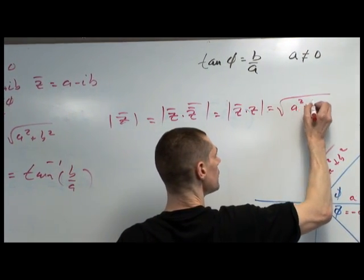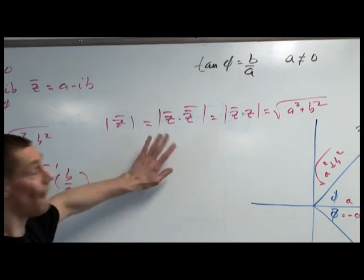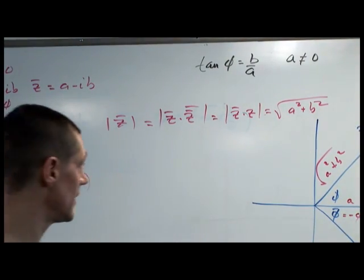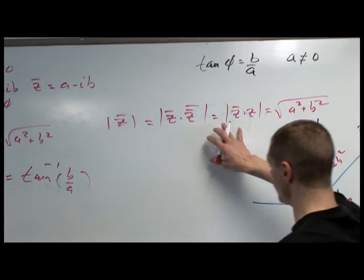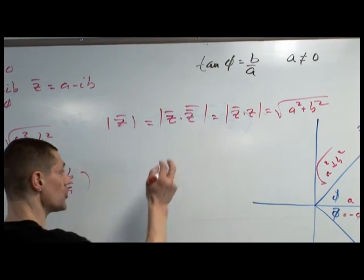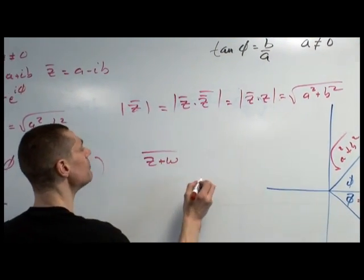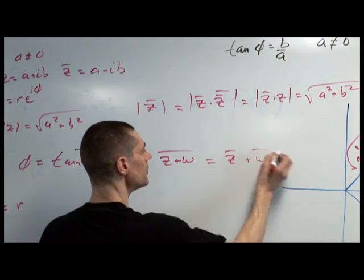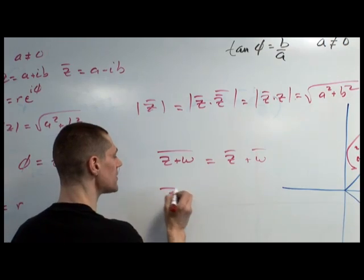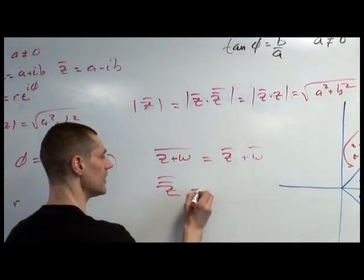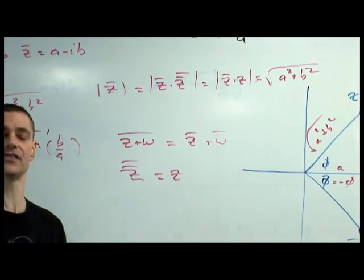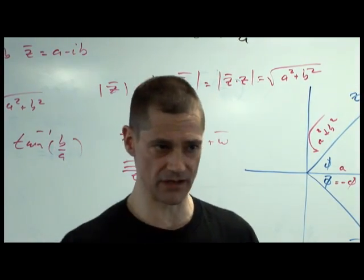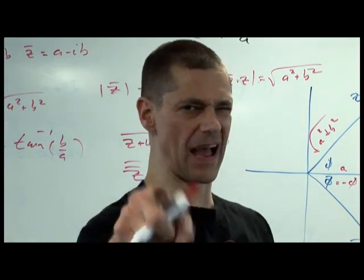This ends up being z bar times z. This is the square root of a squared plus b squared. You'll find there are some exercises in the back of this section that help show you that the complex conjugate of z plus w, for example, is z conjugate plus w conjugate. The complex conjugate of a conjugate is just what it was originally. There are several identities that will be pretty clear. We have to load up a new tape, I'll be right back.